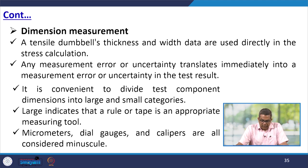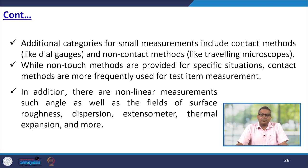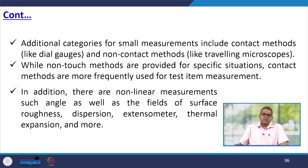It is convenient to divide test component dimensions into large and small categories. For large dimensions, a rule or tape is an appropriate measuring tool. For small dimensions, a micrometer, dial gauge, and calipers are considered. Additional categories for small measurements include contact methods like dial gauges and non-contact methods like travelling microscopes. Non-contact methods are provided for specific situations, while contact methods are more frequently used. There are also non-linear measurements such as angles, surface roughness, dispersion, extensometry, and thermal expansion.